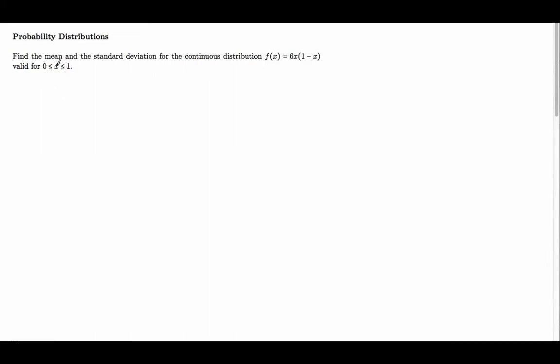For example we've been asked to find the mean and the standard deviation for the following continuous distribution valid for the region between 0 and 1.